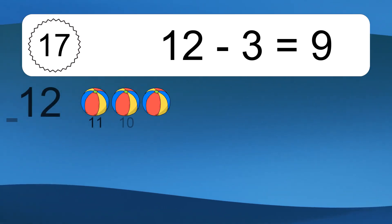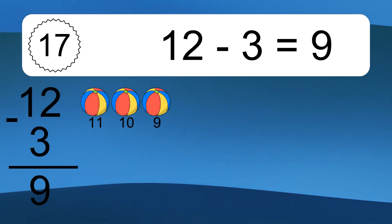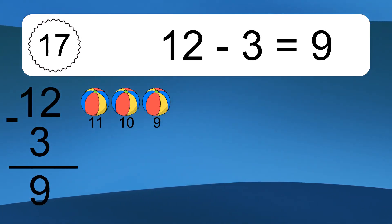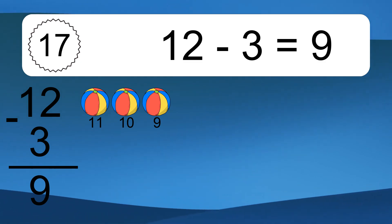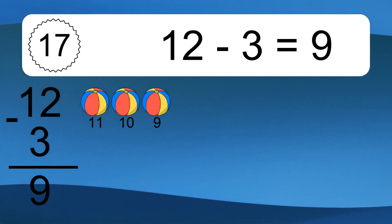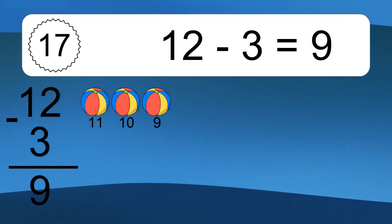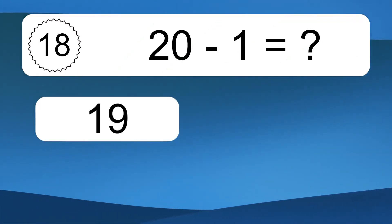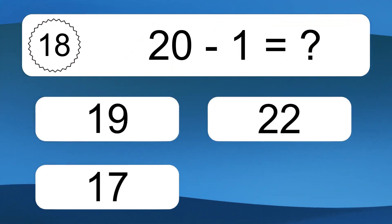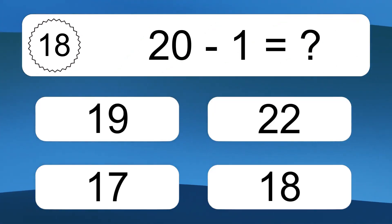12 minus 3 equals 9. Let's count it: 11, 10, 9. 20 minus 1 equals what?